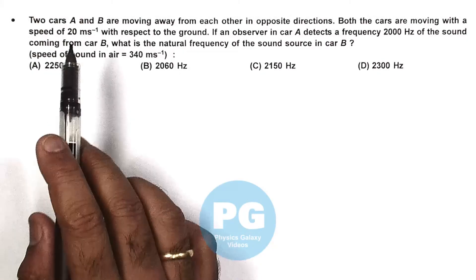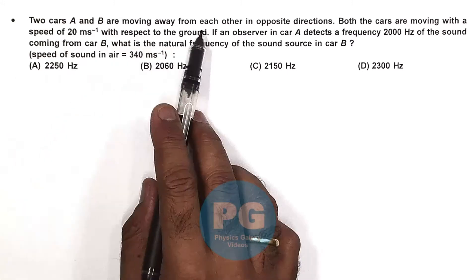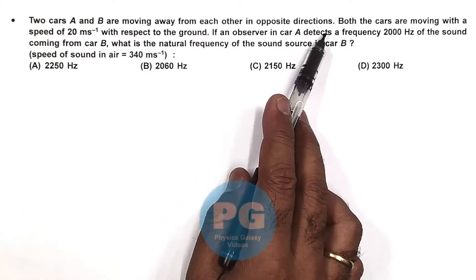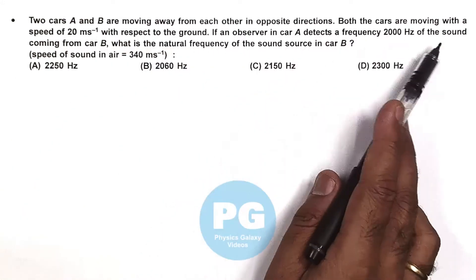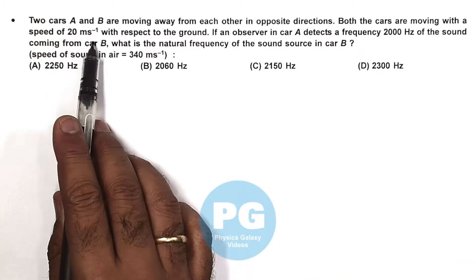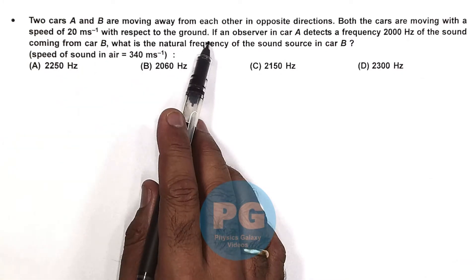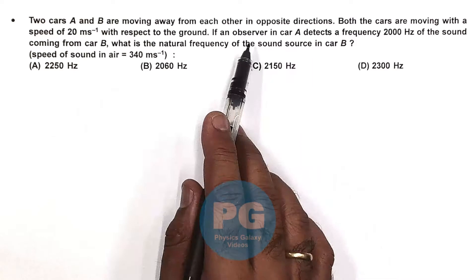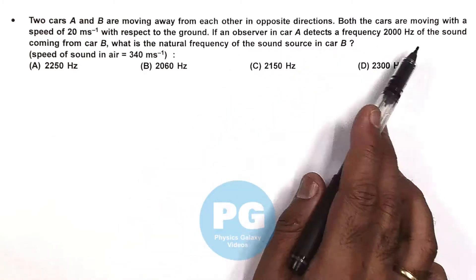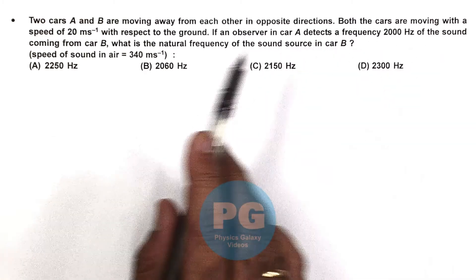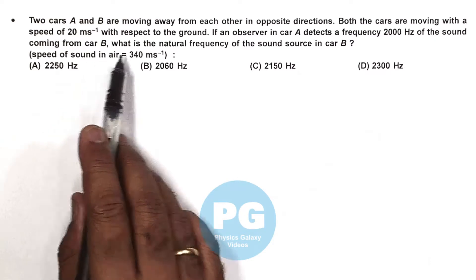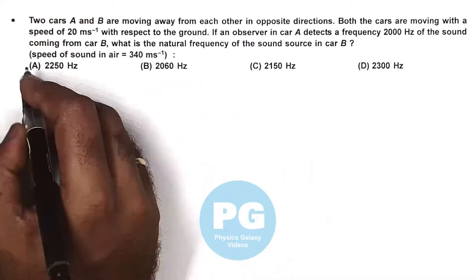In this question, two cars A and B are moving away from each other in opposite directions, both with a speed of 20 meters per second with respect to the ground. If an observer in car A detects a frequency of 2000 hertz of the sound coming from car B, we are required to calculate the natural frequency of the sound source in B.